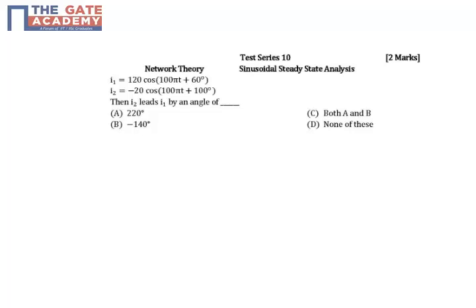In this question we have to determine the phase by which i2 leads i1. Now i2 and i1 are given, they are both sinusoidal, in fact they are cosine functions. We have to determine what is the phase by which i2 leads i1.